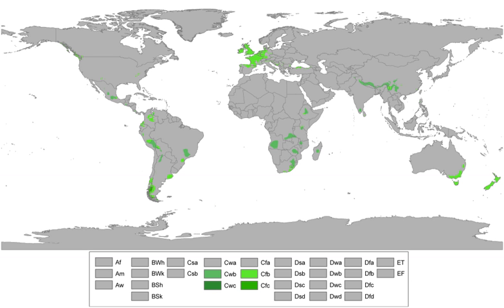Thus, winters across Europe become colder to the east, and summers become hotter. The line between oceanic Europe and Mediterranean Europe normally runs west-to-east and is related to changes in precipitation patterns and differences in seasonal temperatures.